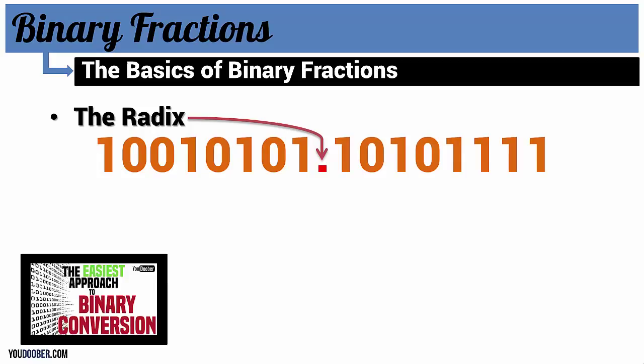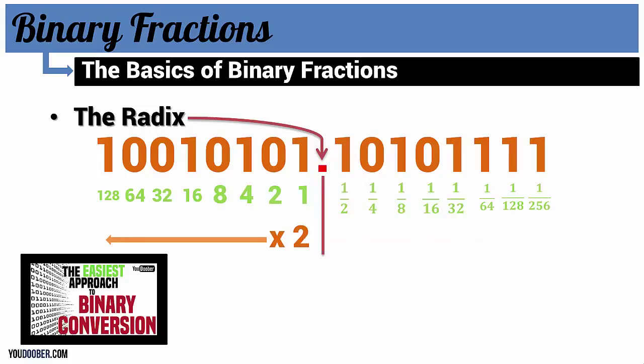In my previous tutorial where we converted whole number binary, we started from the right and worked left and we multiplied by two as we went. In this tutorial we're going to start from the radix and work right, dividing by two the entire time.